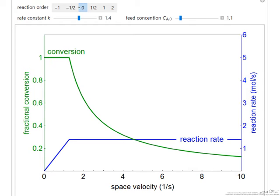Notice that at low space velocity the conversion is one, everything that flows in the reactor is converted, the rate of reaction doesn't depend on the concentration. And because the amount of material we're feeding is low, we completely convert it.